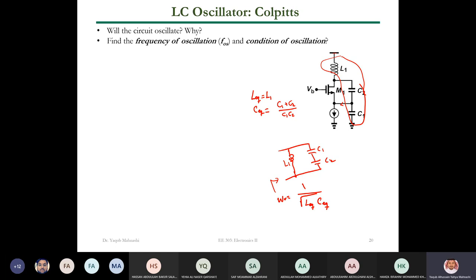The main difference between Colpitts and Hartley is the connection of inductors and capacitors. In Colpitts we'll come to the full analysis, but in brief: the Colpitts frequency of oscillation is at 1/√(L1 · C1C2/(C1+C2)).